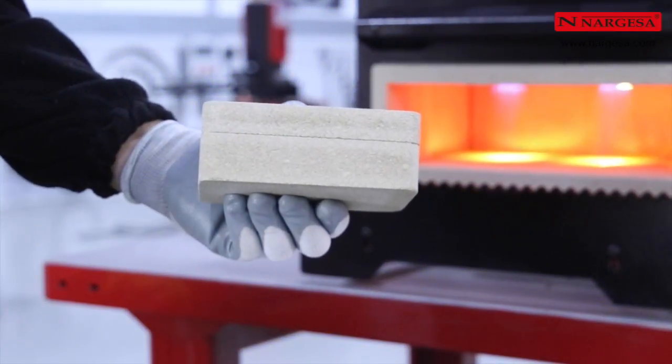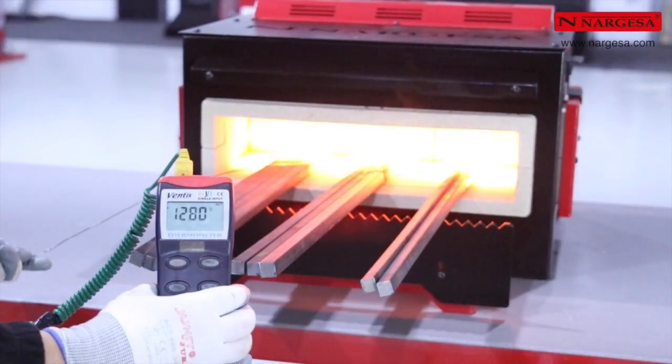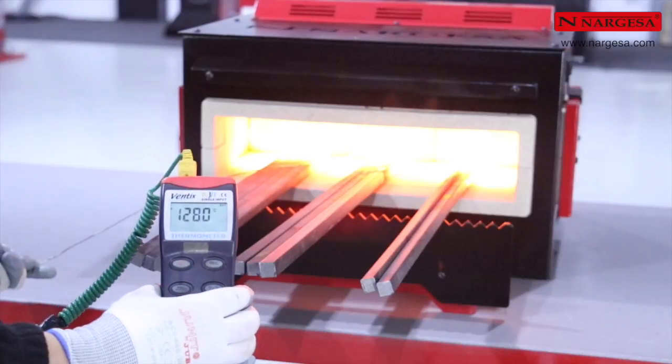La double couche de cet isolant de nouvelle génération augmente le pouvoir calorifique du four, dépassant les 1300 degrés à l'intérieur.